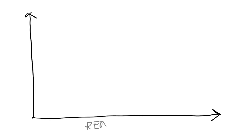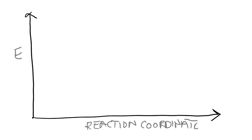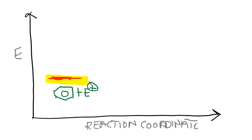Now I want to discuss the energy profile associated with electrophilic aromatic substitution. We normally represent the energy profile with the x-axis as the reaction coordinate—some people also call it progress of reaction—and the y-axis as energy. We start with the starting compounds, basically benzene and a generic electrophile E+, and this is the energy level we start from.